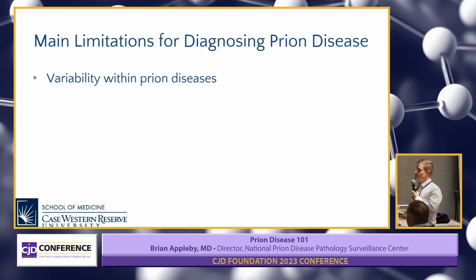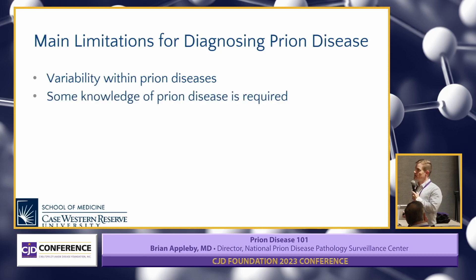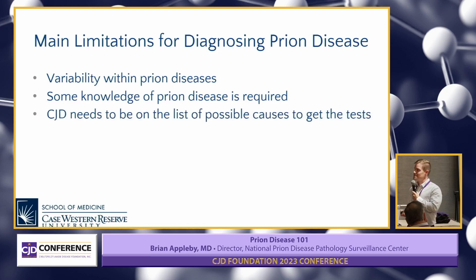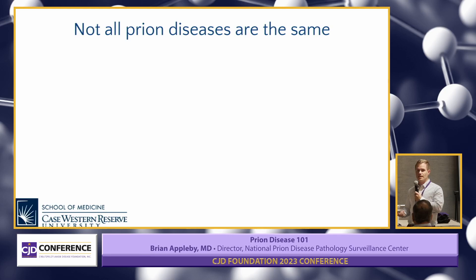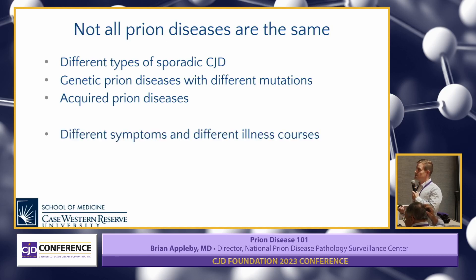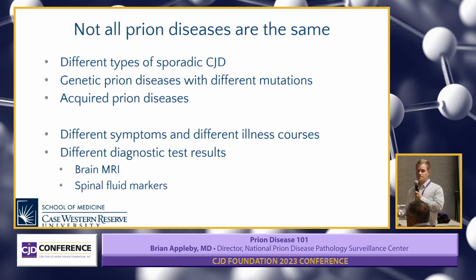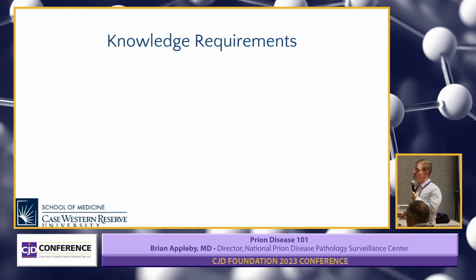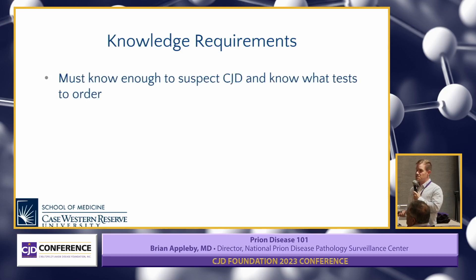What are the main limitations for diagnosing prion disease? There's a lot of clinical variability. You have to know enough about it to order the right test, and it has to actually be on the list of possible diagnoses. Not all prion diseases are the same — we have different types of sporadic CJD, genetic prion disease with different mutations that can look different clinically with different durations and ages of onset, and acquired prion disease. Variant CJD looks very different both under the microscope and clinically from sporadic CJD. Someone may look like CJD, and another person may look like they have Alzheimer's disease for the first six to eight months. Sometimes not all the diagnostic tests perform the same in each type of prion disease.